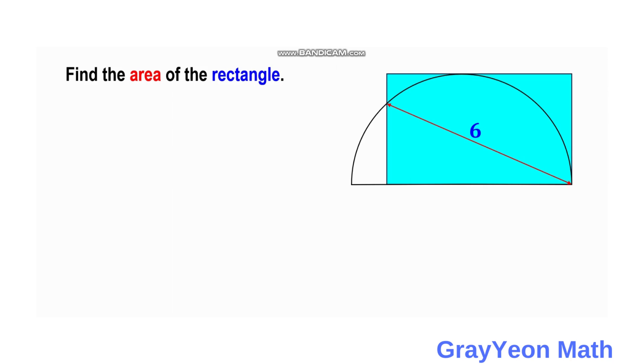First, we need to label the length of this rectangle as x and the width as r, since this is also the radius of the semi-circle. The area will be, of course, area equals xr.